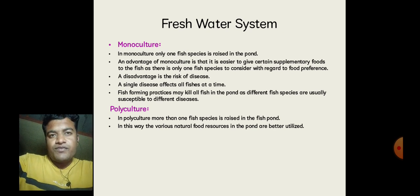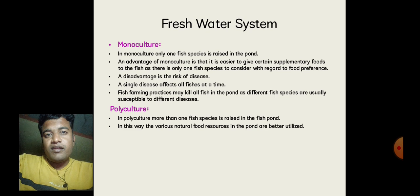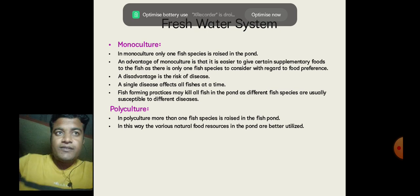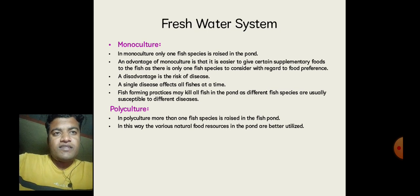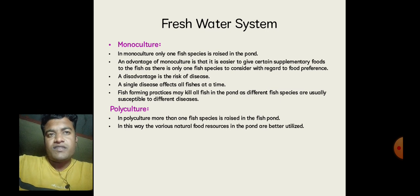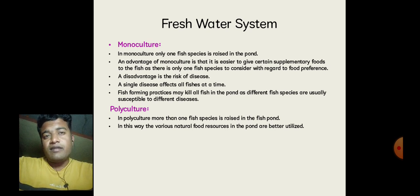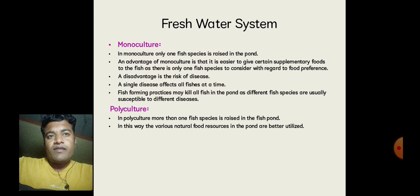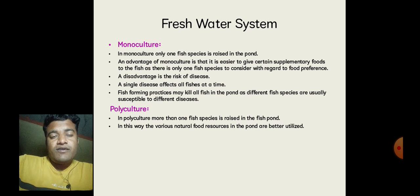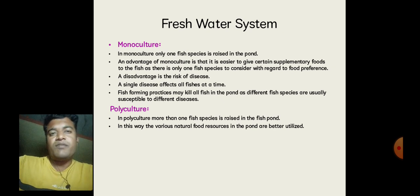A disadvantage of monoculture is that if some disease affects the fishes, it may affect all the fishes at a time. In monoculture, fish farming practices may result in the death of all fishes in the pond, as different fishes are actually susceptible to different diseases. In a single species monoculture, the disease affects more quickly, and eventually the single fish species will decline. These are the disadvantages of monoculture.